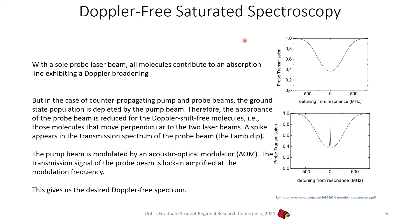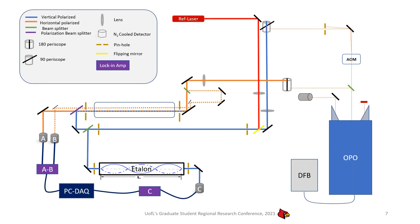Now, in case of only one probe laser beam, all molecules will contribute to an absorption line, hence exhibiting a Doppler broadening spectrum. But, in case of our counter propagating pump and probe experiment, the ground state population will already be depleted by the high intensity pump. So, the probe will exhibit a dip in the spectrum for the Doppler free molecules. That means those molecules who will experience pump and probe simultaneously without any Doppler effect. This dip is called lambda dip, which is our Doppler free signal. Our pump beam will be modulated by an acoustic optical modulator AOM. The transmission signal of the probe beam is lock amplified at modulation frequency. This will give us the desired Doppler free spectrum.